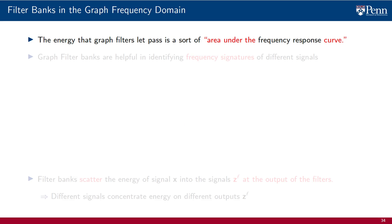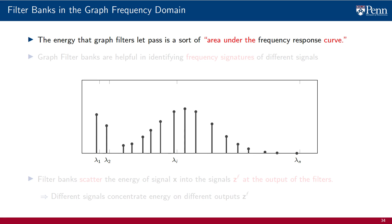From this theorem, we can think of the energy that graph filters let pass as a sort of area under the frequency response curve. This diagram represents the squared GFT of an input signal, with a curve added to represent the squared response of a graph filter. To capture the energy of the output, we compute the product between the two and sum — we compute the area under the curve, sort of. We are actually summing spikes, but conceptually close enough.